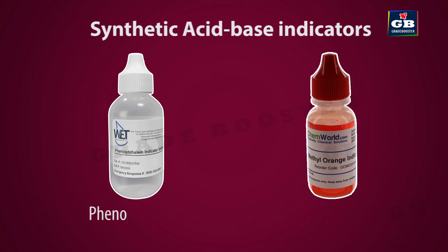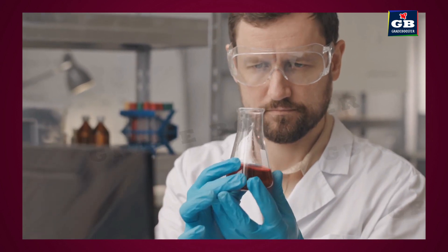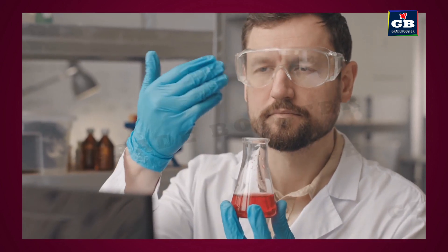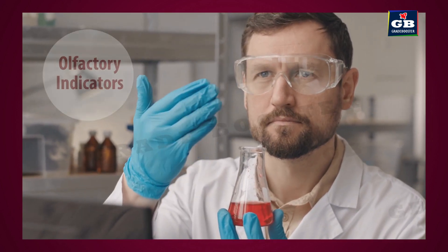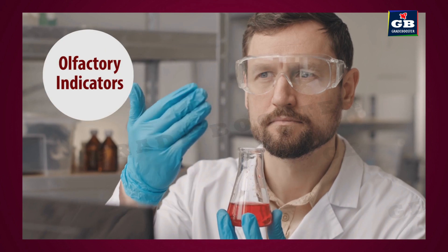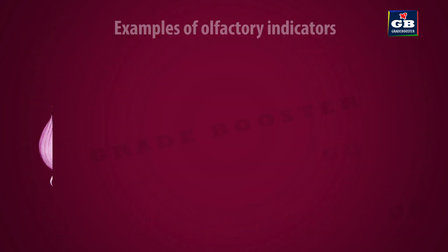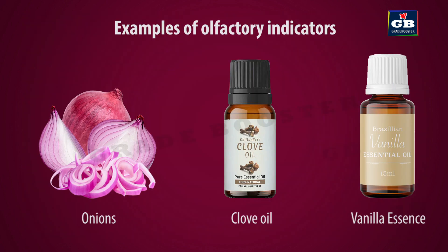Methyl orange and phenolphthalein are the synthetic acid-base indicators. Certain acid-base indicators work with smell — these are called olfactory indicators. Examples include onion, vanilla essence, and clove oil.